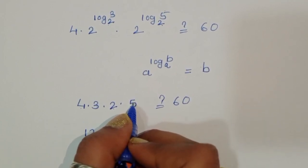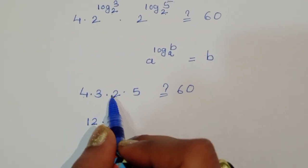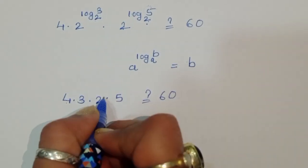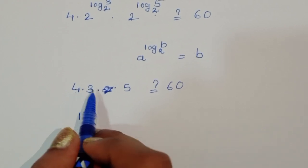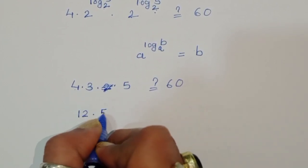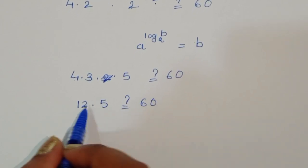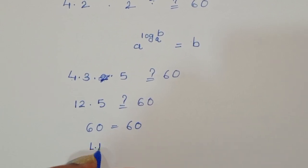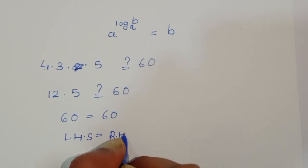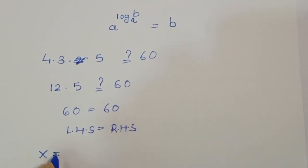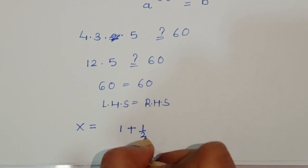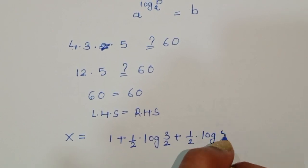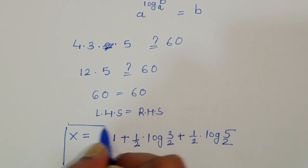So we get 4 times 3 times 5, which is 4 times 3 equals 12, and 12 times 5 equals 60. So 60 equals 60, meaning LHS equals RHS. Therefore the value of x is 1 plus one-half times log of 3 to the base 2, plus one-half times log of 5 to the base 2. This is the correct solution.